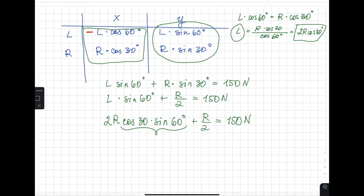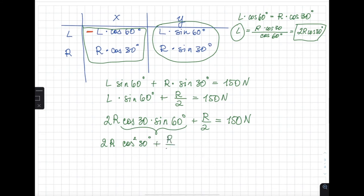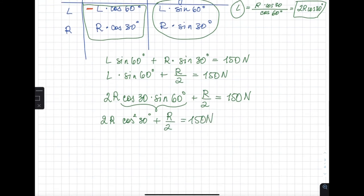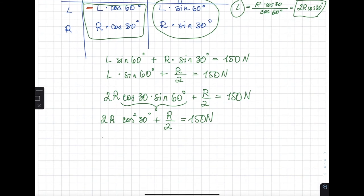After this, sine of 60 and cosine of 30 is the same thing, so I can say 2R cosine of 30, 40 squared plus R over 2 equals 150 newtons. After this, you can say that it's just, if I multiply everything by 2, that's 4R cosine squared of 30 degrees plus R equals 300 newtons.